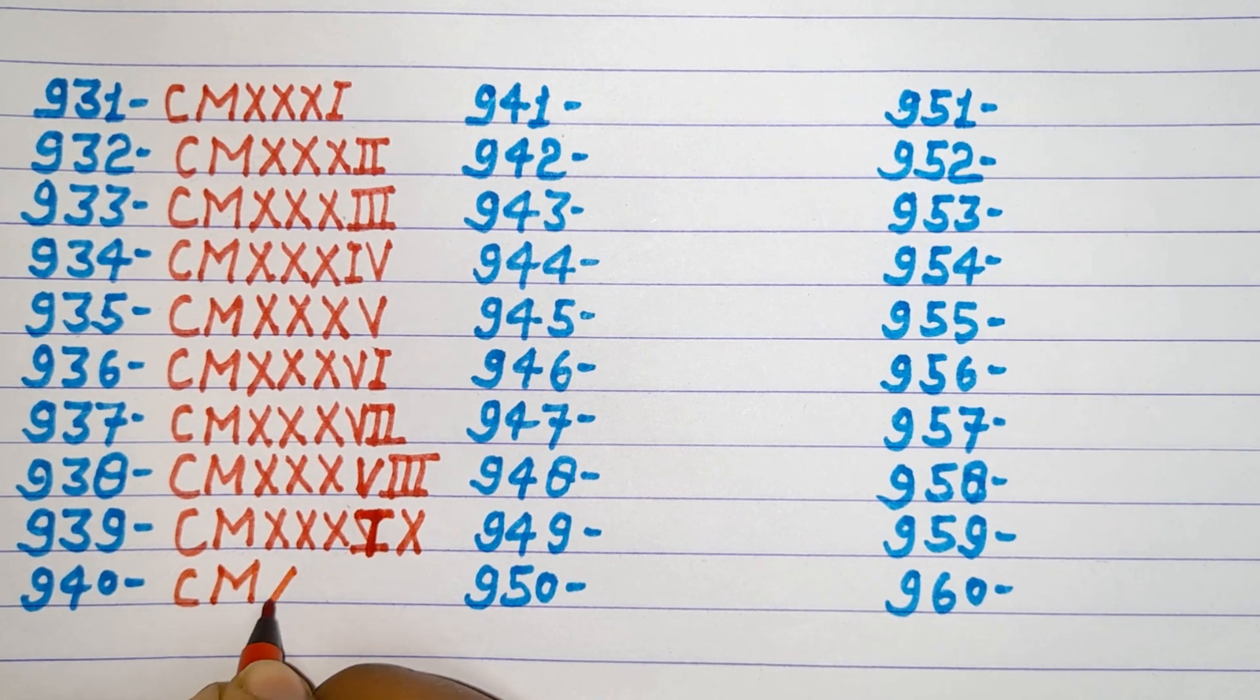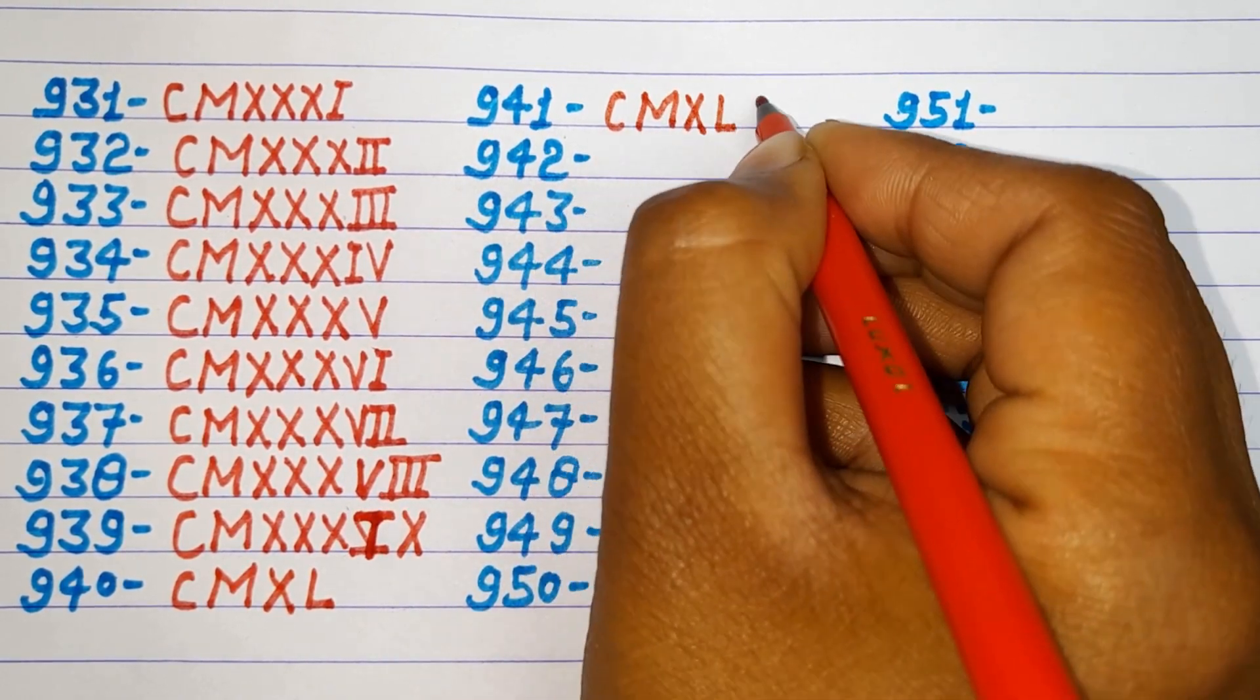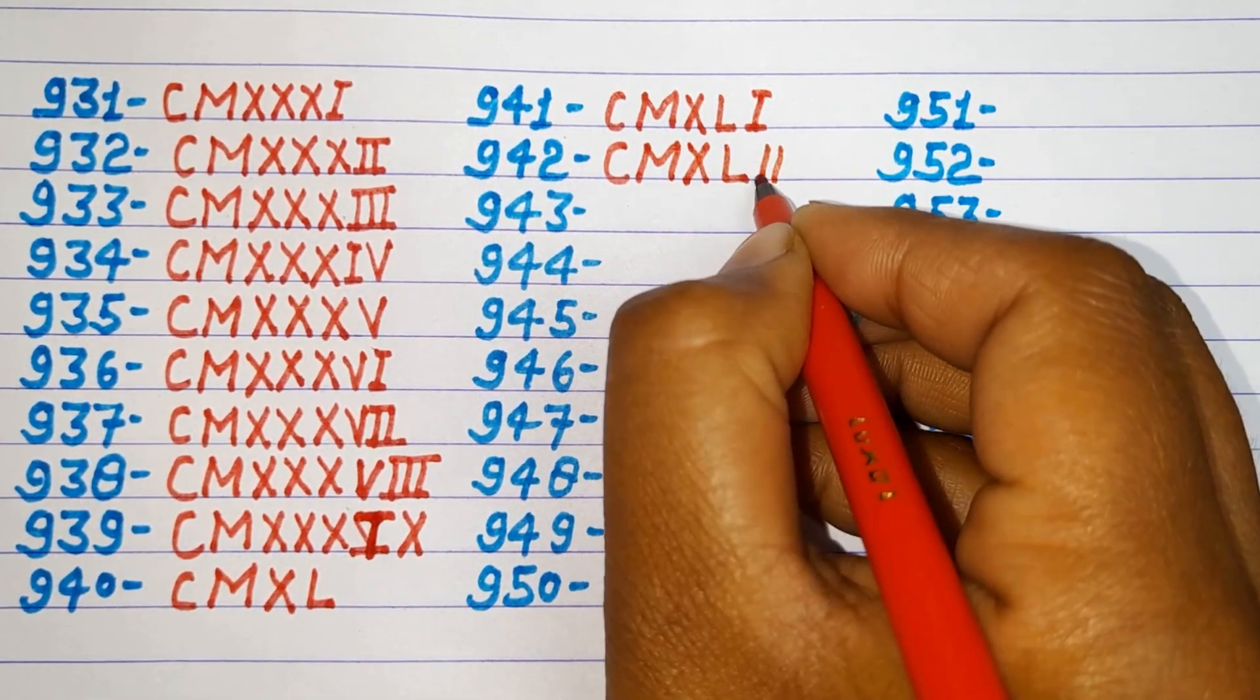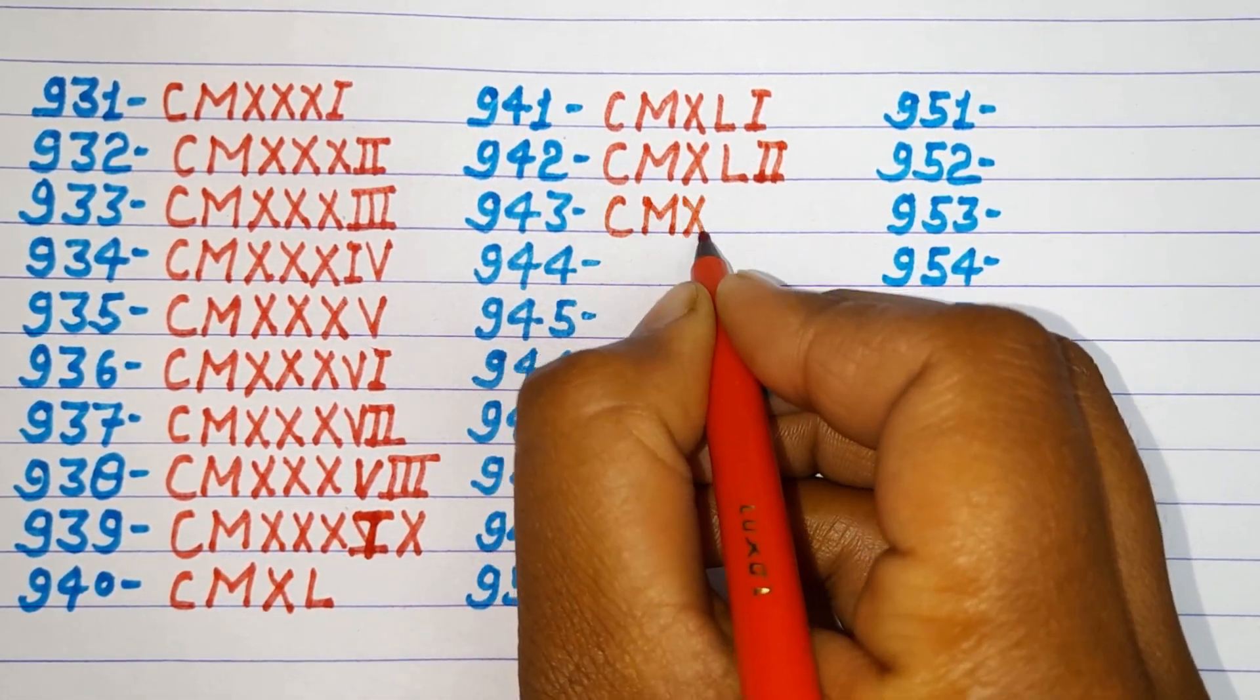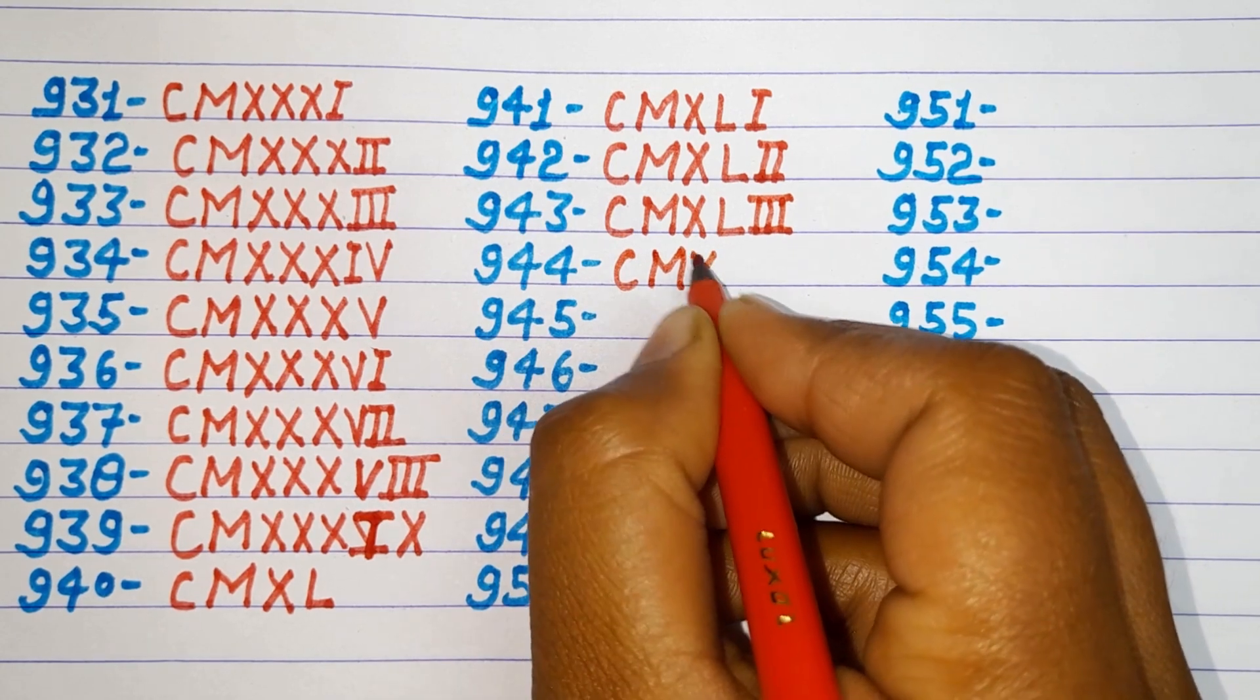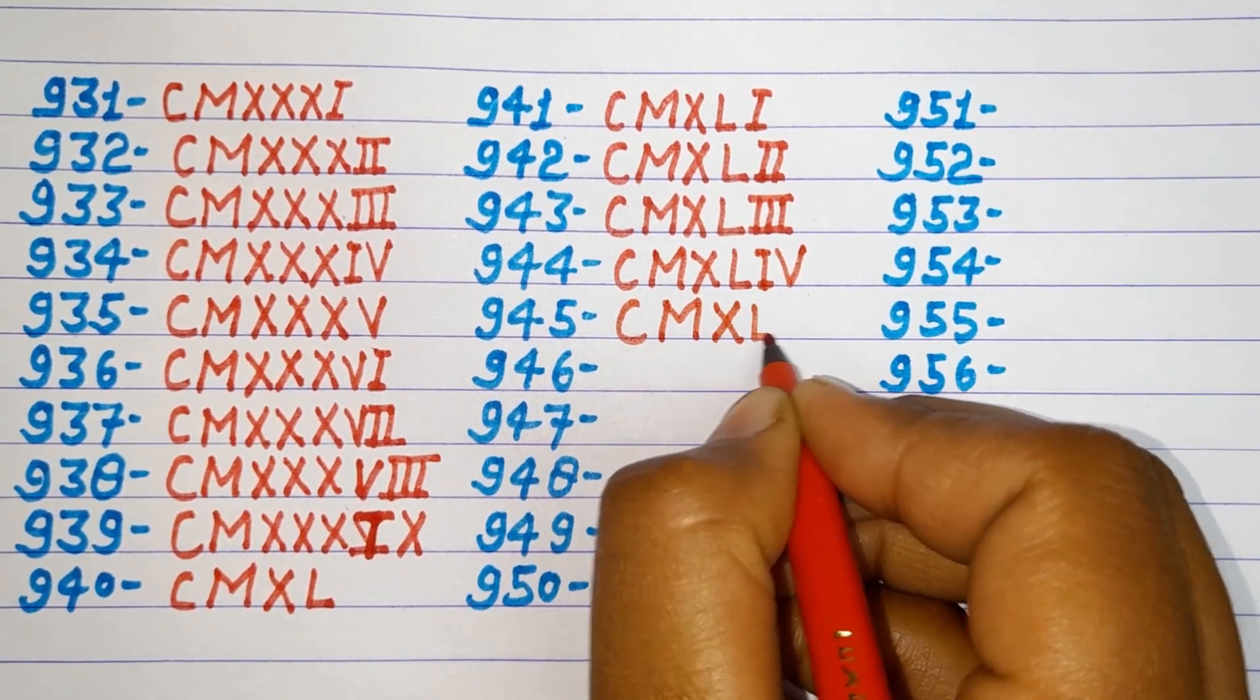940 CMXL, 941 CMXLI, 942 CMXLII, 943 CMXLIII, 944 CMXLIV, 945 CMXLV.